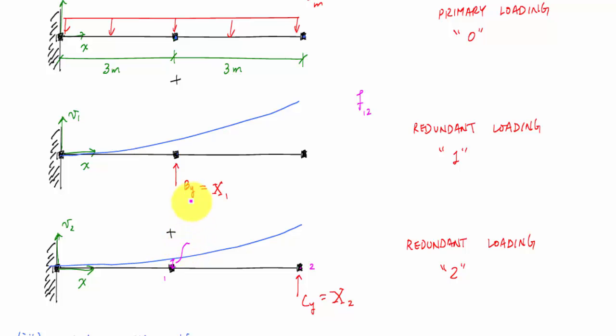And this displacement, the magnitude of this displacement is f12 times x2. If x2 were 1 we would just have the flexibility coefficient. This displacement right here, the magnitude of this would be f22 times x2. This flexibility coefficient f22 is the displacement at location 2 due to a unit load at location 2. If we multiply it by the load then we'll get the actual displacement. Here this would be f11 times x1 and this would be f21 times x1.